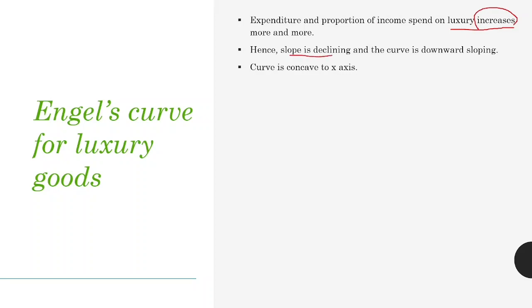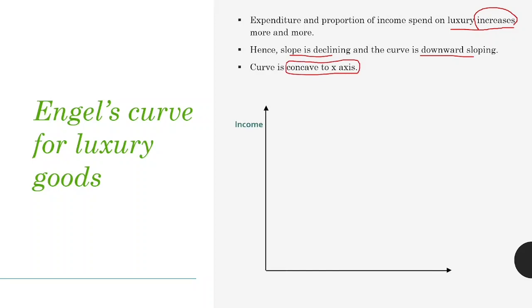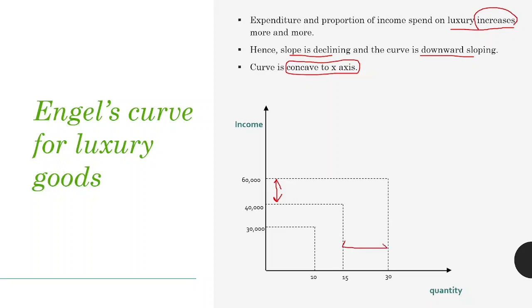On the graph, the x-axis has quantity and the y-axis has income. Suppose your income was 30,000 and the amount of luxury items in your home was 10; your income increases to 40,000 and the amount of luxury items is 15; then your income is 60,000 and the amount of luxury items is 30. Here we can clearly see that income is increasing at a lower rate but the quantity of luxury items is increasing more.